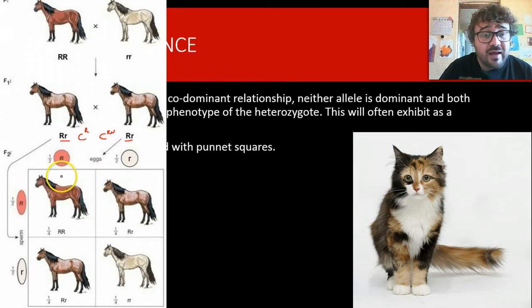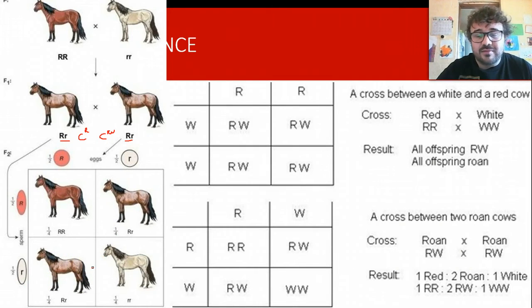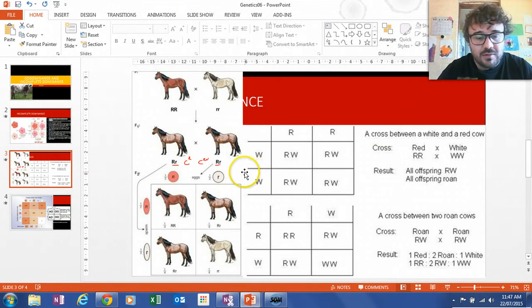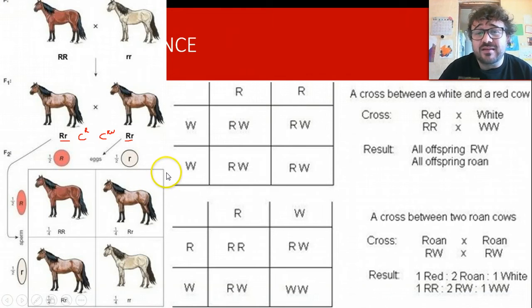So, we've got our—this is backwards, the male should be up this side. So, you've got your reds, so a quarter of them are going to be red. But half of them are going to be your roan horse, and a quarter of them is going to be white.